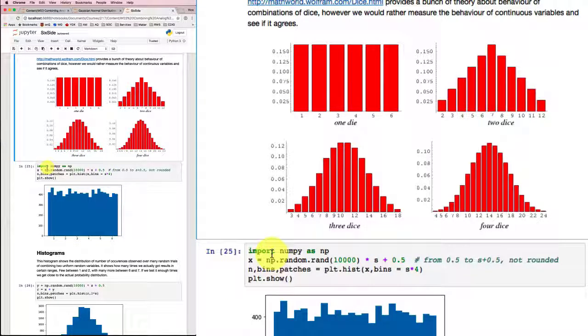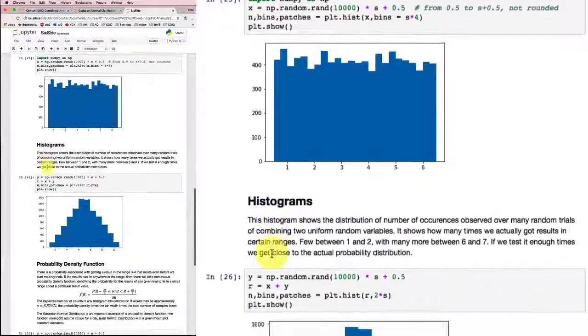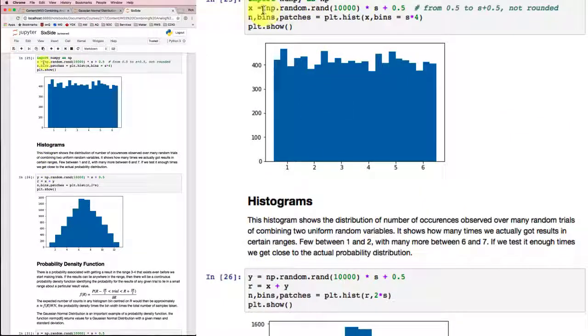So this time around, I'm going to do the same thing. I've got my x, and I'm going to get some random numbers. They're going to get 10,000 of them. And I'm going to multiply by the number of sides, s, so that I'll go from 0.5 up to s plus 0.5, not rounded. And then I'll plot that as a histogram and see what it looks like.